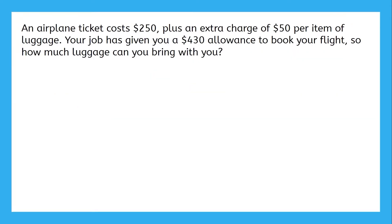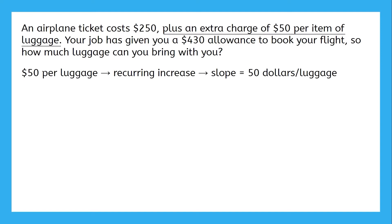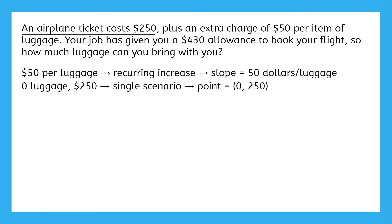An airplane ticket costs $250 plus an extra charge of $50 per item of luggage. Your job has given you a $430 allowance to book your flight, so how much luggage can you bring? It costs $50 per item of luggage — a recurring increase — so the slope is 50 per luggage item. The ticket itself costs $250 even if you bring no luggage, giving us the point (0 luggage, $250). That's a y-intercept, so with a slope and a y-intercept it's obvious the best form is slope-intercept form.